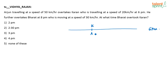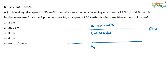Arjun is travelling at a speed of 50 km per hour and Karan is travelling at a speed of 20 km per hour. He further overtakes Bharat at 8 p.m., who is moving at a speed of 30 km per hour. Arjun is overtaking Bharat at 8 p.m. What is the distance Arjun has travelled by 8 p.m.? Arjun travels at 50 km per hour, so in 2 hours Arjun will cover 100 km.